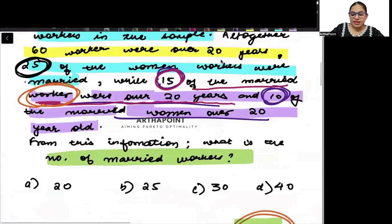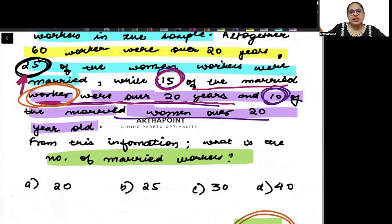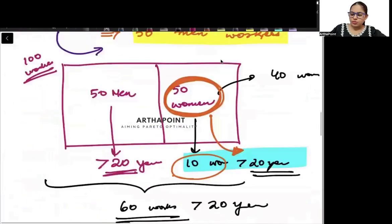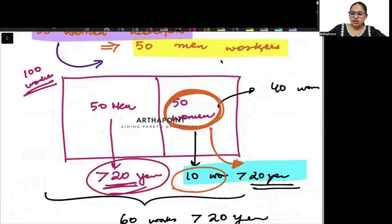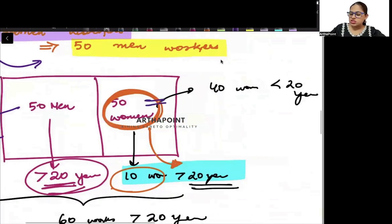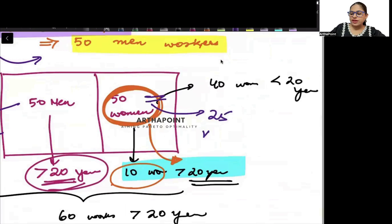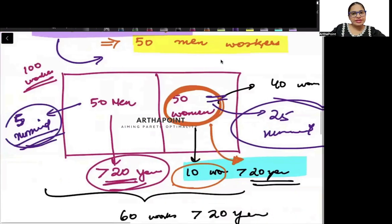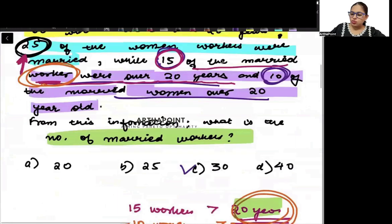There are 5 male workers who are married, and there are 25 married women workers. So in total, the number of married workers is 30. Thank you.